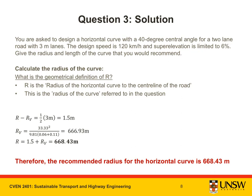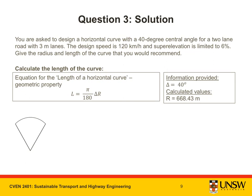The recommended radius for the horizontal curve is 668.43 metres. It's really important that you don't use RV, as RV is not the real radius of the curve. Now let's go ahead and solve for the length of the curve. We use a simple relationship between radius R, arc length L, and angle delta. Note that delta must be in radians; because we are entering delta in degrees, we apply the conversion factor pi over 180.